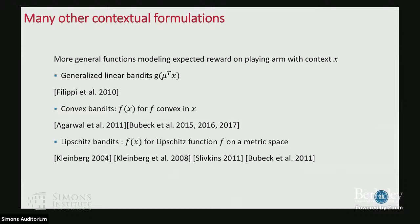There are other contextual formulations: you can generalize to a setting where the reward is a non-linear function of a linear model — for example, log of mu-transpose X — and still get regret bounds using similar techniques given Lipschitz constants. Even further generalizations exist for functions on a general metric space, using a zooming algorithm that adaptively explores the right parts of the metric space.